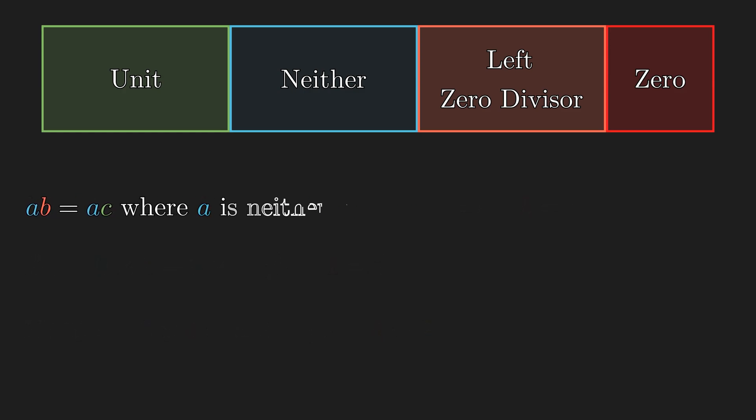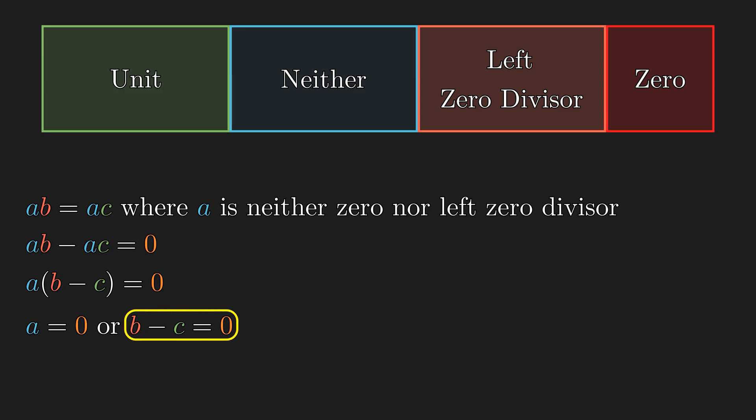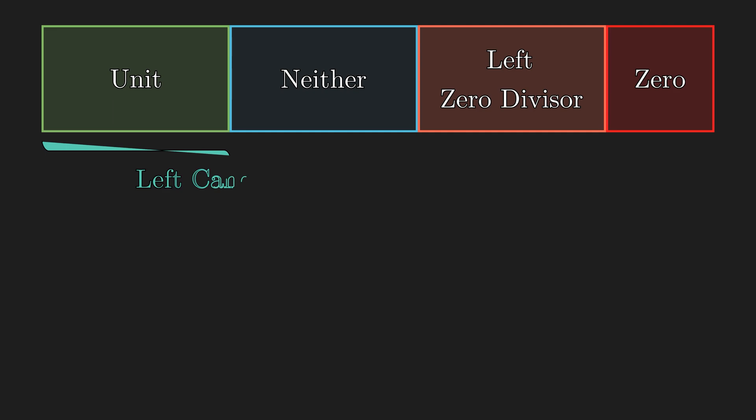So let's start by assuming that a is neither a zero nor a left zero divisor. Then we can subtract ac on both sides and use the distributed property to factor a out. And since a is not a left zero divisor, the zero product property must hold. And since a is not equal to zero, it must be the case that b minus c is equal to zero. So this proves that b is equal to c as long as a is neither zero nor a left zero divisor. So we give a special name to elements that are neither zero nor a left zero divisor.